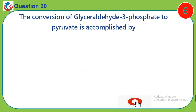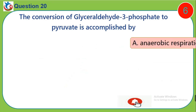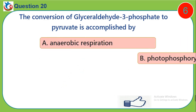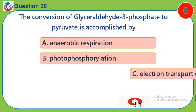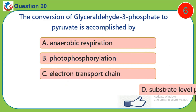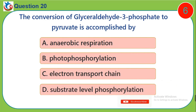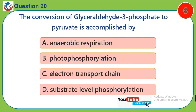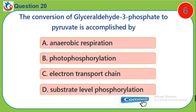Question 20. The conversion of glyceraldehyde-3-phosphate to pyruvate is accomplished by: A. Anaerobic respiration. B. Photophosphorylation. C. Electron transport chain. D. Substrate-level phosphorylation.